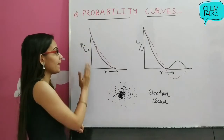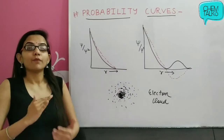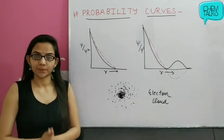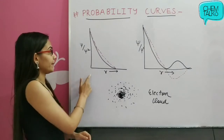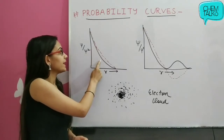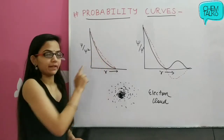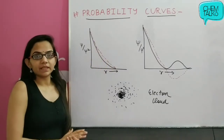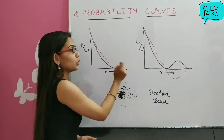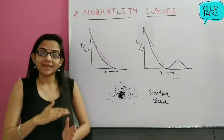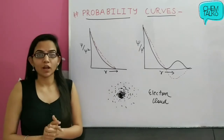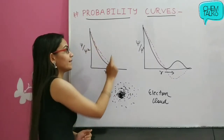If we think that the nucleus is present at the origin, the distance increases from the nucleus. We study how the probability of finding the electron changes with distance through probability distribution curves. As you can see in this graph, we plot psi-square along r. The solid black line represents psi-square and the dotted line represents psi. Basically, psi-square represents the probability density graph plotted against r.